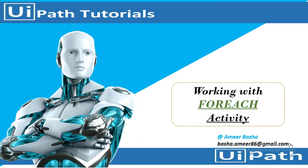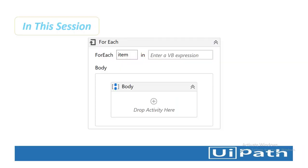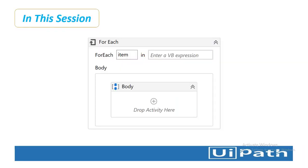Hello everyone. In the previous two sessions we learned about if and switch activities. In this session we are going to learn about for each activities. If we observe, both if and switch activities are not useful for repetitive processes. For each, while, and do while activities are used for repetitive processes.